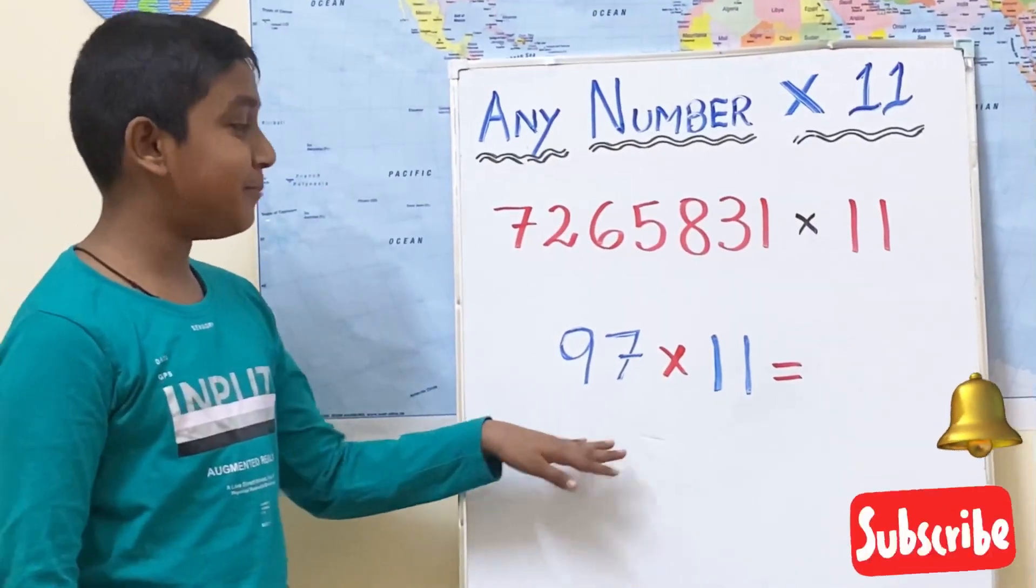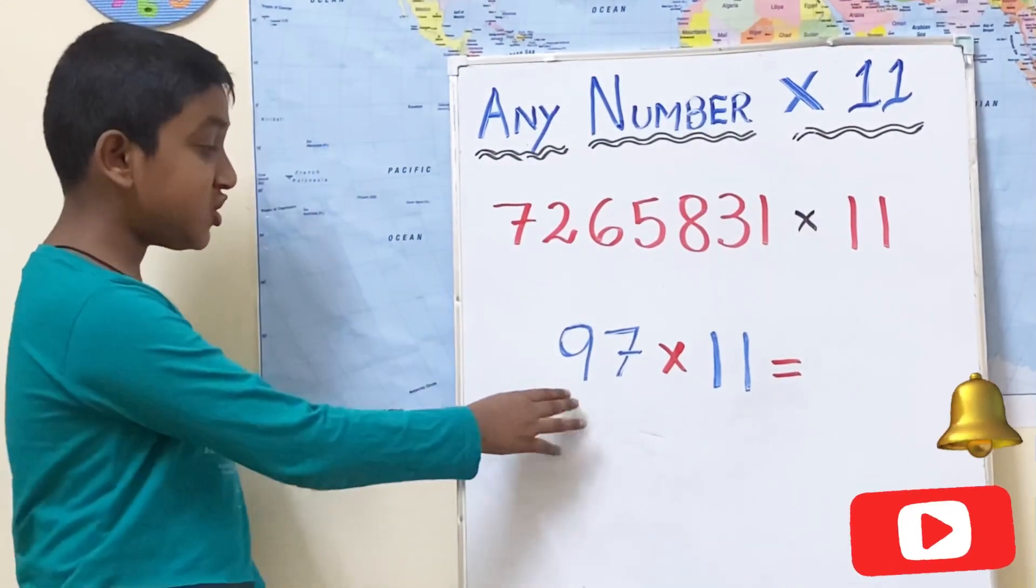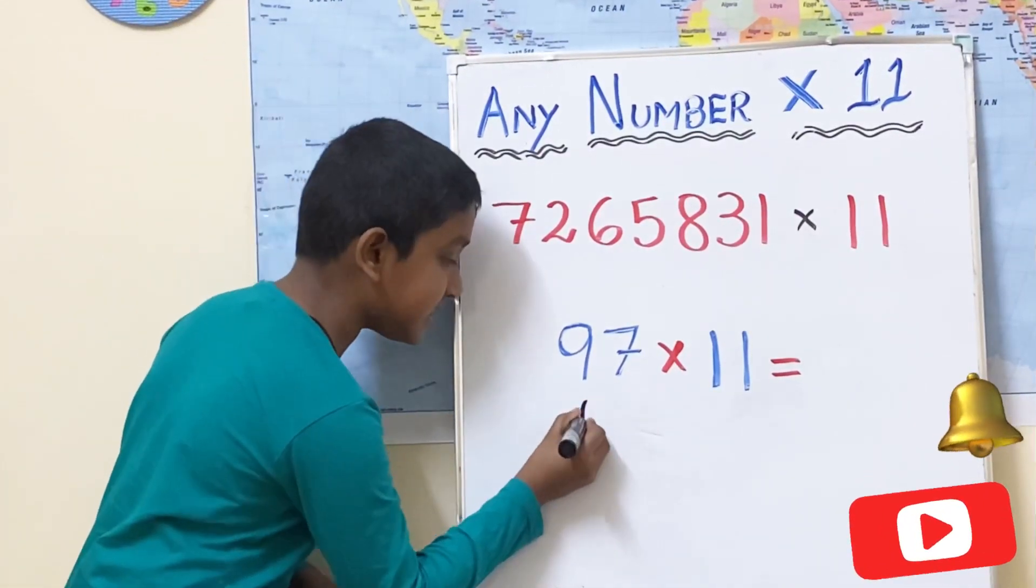97 multiplied by 11. As we saw earlier, question's first digit is the answer's first digit.